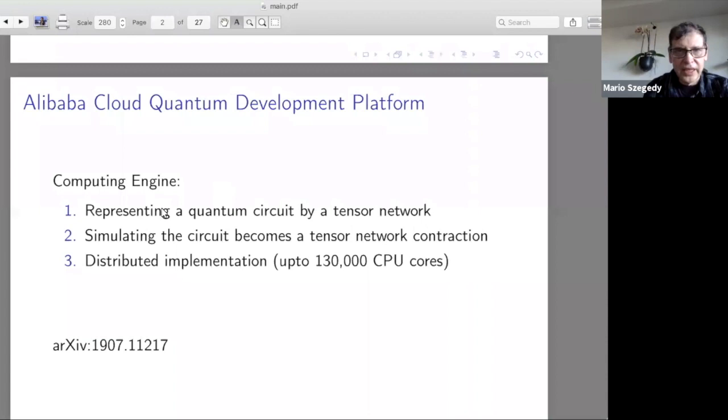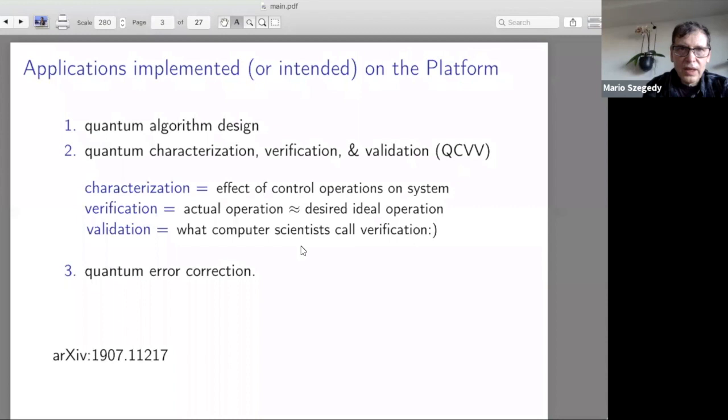The main idea, which actually is not our idea but a well-known idea, is that we represent the quantum circuit as a tensor network. So most of the operations, most of the tasks are to contract the tensor network. What's good about our capabilities is that we can distribute our computation over 100,000 CPU cores, so that of course gives significant computing power.